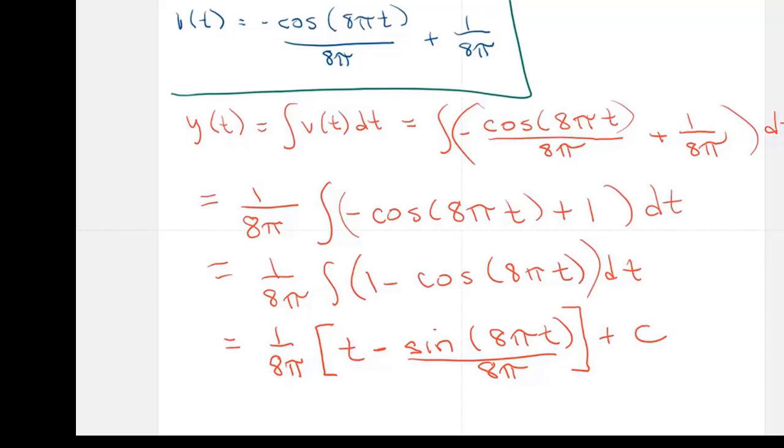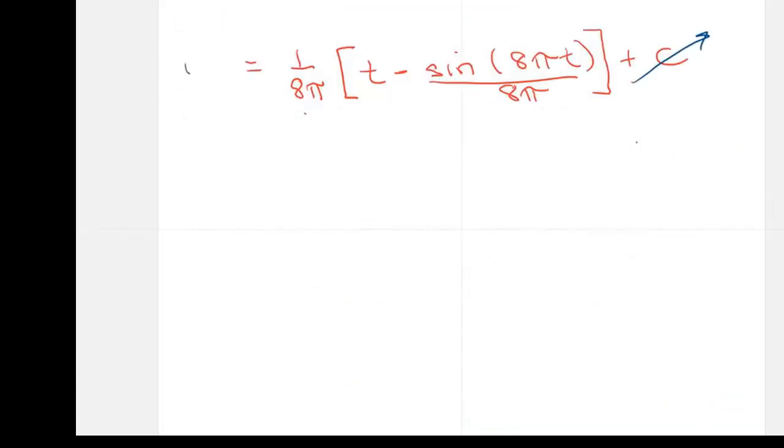And so let's continue. We'll say we know that Y of 0 equals 0, which equals 1 over 8π times, well, T is 0. So this is 0 minus sine of 0. Sine of 0 is 0. So that's all 0 plus C. And 0 times anything is 0. So this all disappears and we get C equals 0. Y of T is equal to basically this. Or I could expand it and say it's equal to T over 8π minus sine of 8π T over 8π squared. And that would be my final answer.